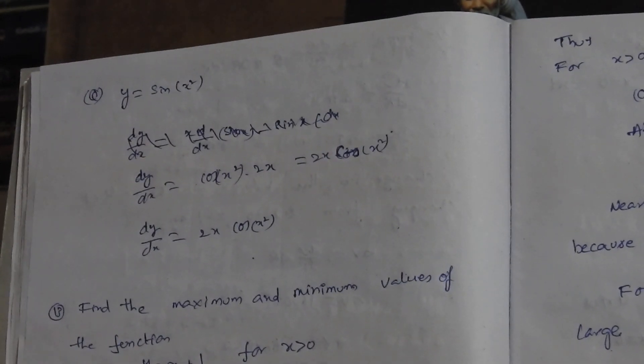For y is equal to sin of x squared, dy by dx is equal to cos of x squared multiplied by the differentiation of x squared, which is 2x. So dy by dx is equal to 2x cos of x squared.